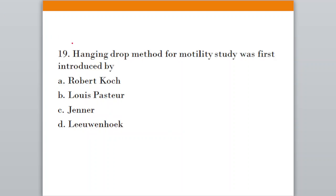Question number nineteen: Hanging drop method for motility was first studied by — Option A, Robert Koch; Option B, Louis Pasteur; Option C, Jenner; Option D, Leeuwenhoek. The correct answer is option D, Leeuwenhoek.